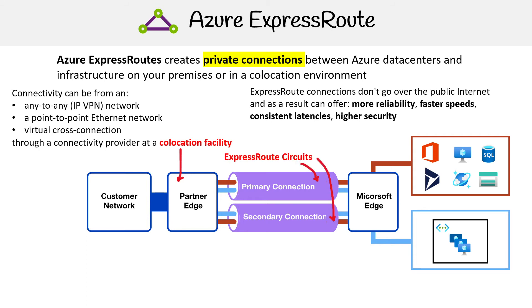The way you establish a connection is by creating ExpressRoute circuits. It's pretty common to have more than one because you want high availability, just in case one goes out.